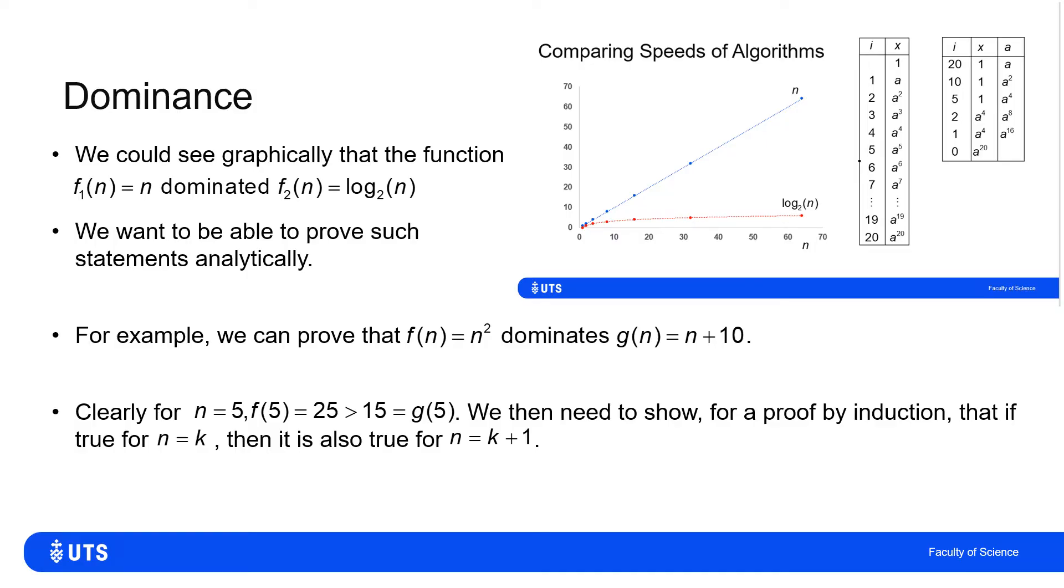So I want to prove now, having proven the first case, that f of 5 is larger than g of 5, I want to show that for every other value larger than that, if f of n is larger than g of n, then if that's true for n equals k, I want to show it also true for n equals k plus 1. So we get to do this by a proof by induction.